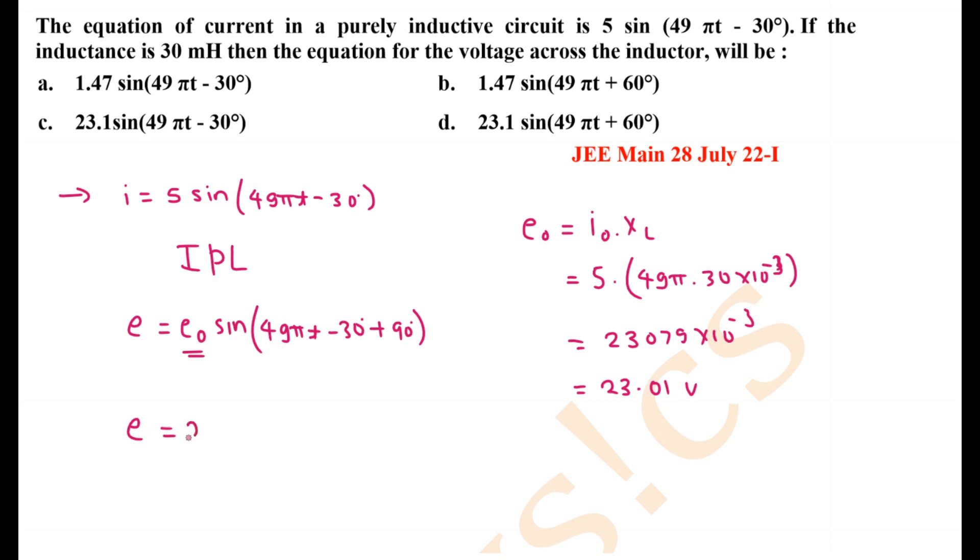So we can write E equals 23.01 sine of 49 pi t plus 60 degrees. So the correct answer is here, option D. Option D is the correct one.